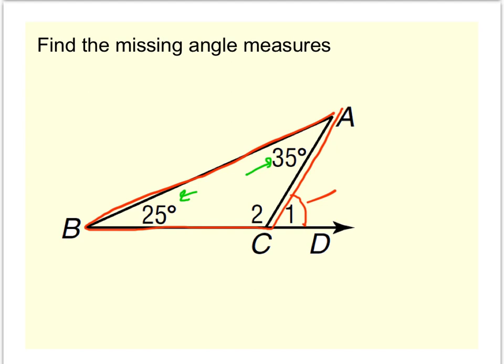So once again, the exterior angle theorem says angle 1 is equal to 25 plus 35, which makes 60 degrees.